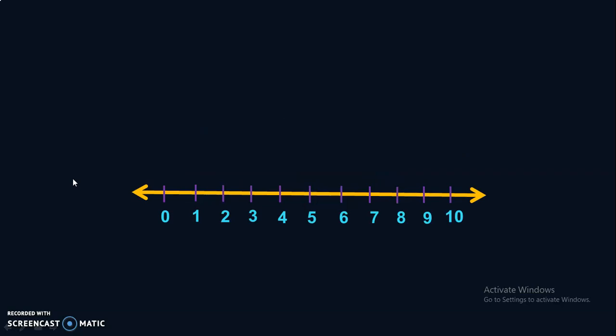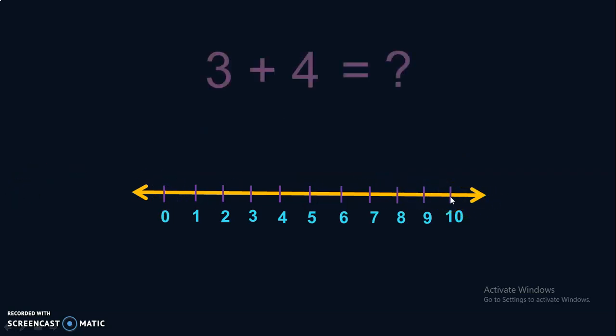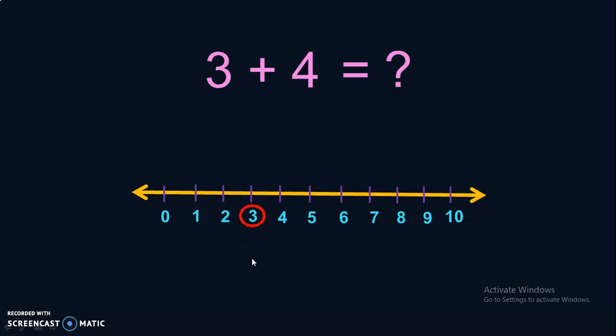This is a number line with numbers 0 to 10. We are going to add 3 plus 4. First, locate the number 3 in the number line. Then, if we have to add 4, we have to jump in the forward direction 4 times.